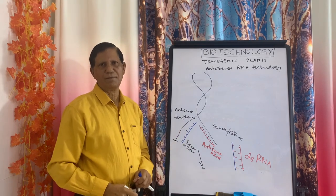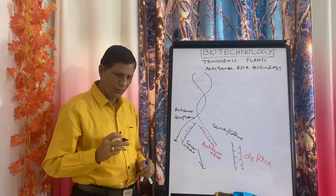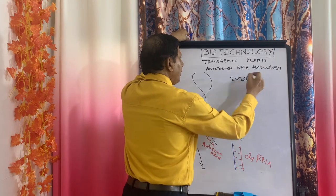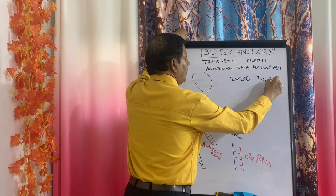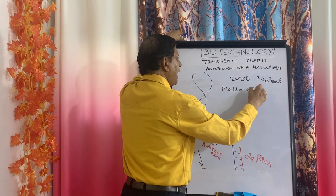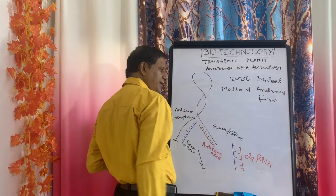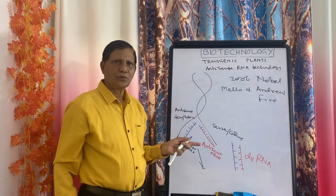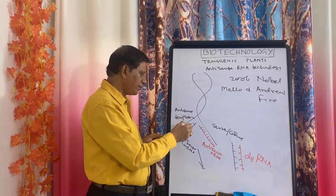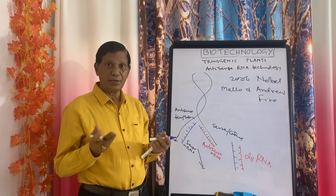But scientists made it possible. In 2006, the Nobel Prize was given to Melo and Andrew Fire. For what reason? Through antisense RNA technology, they silenced the expression of this gene. Let us discuss how they did it — some intellect is required here, so be careful.